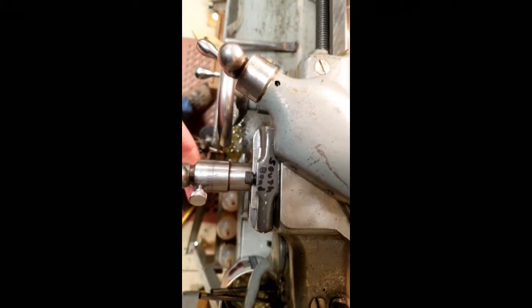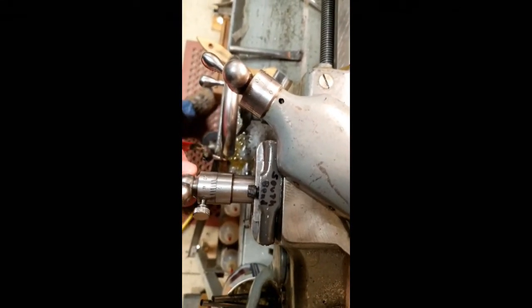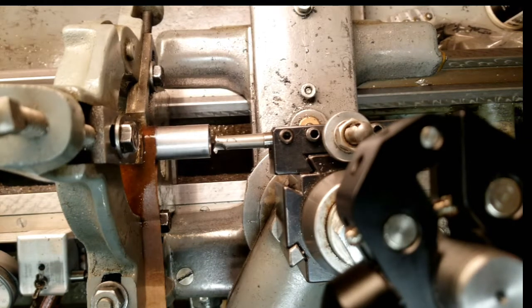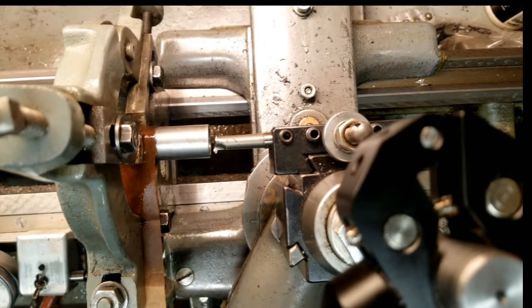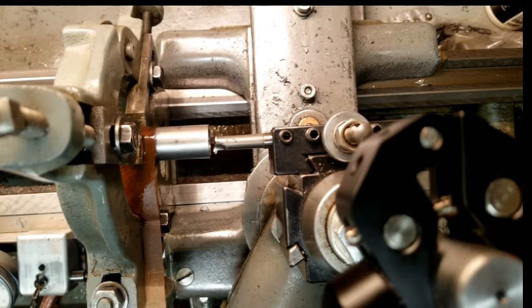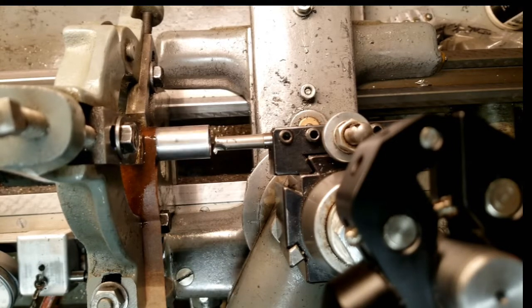And I also use a little stop on internal threading so that I don't back the tool out into the other side. And then I put the feed on with the top slide set at the reverse 30 for the internal threads. That's a little shot from the upper side. I'm using a Bokum form tool there.